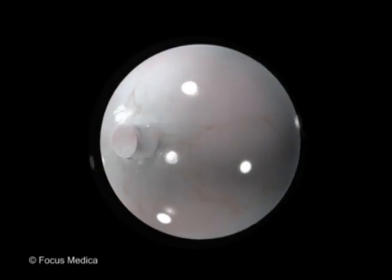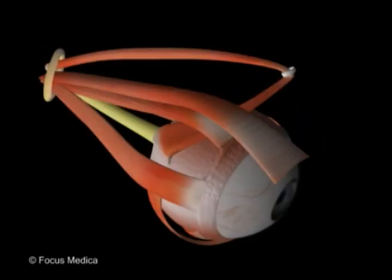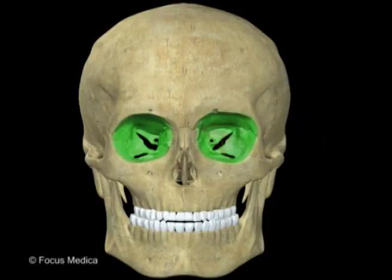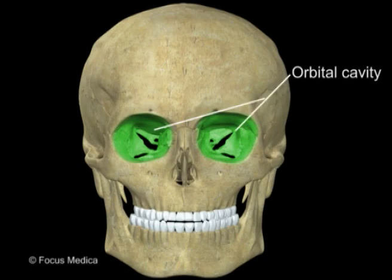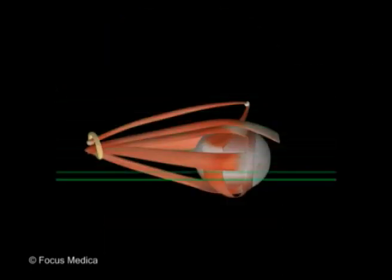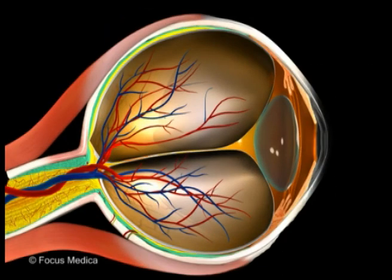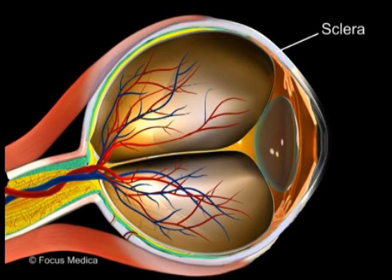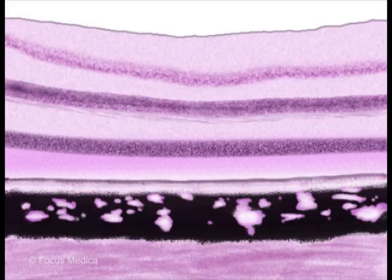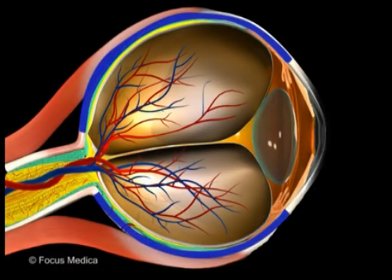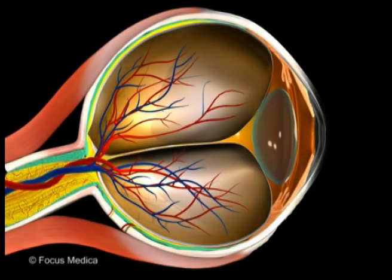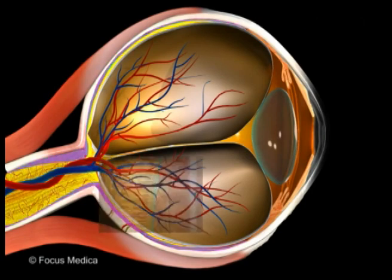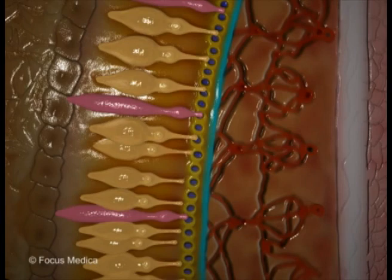The eyeball is a large globe-like apparatus suspended by muscles and fascia inside the orbital cavity. The structure of the eyeball is best appreciated in a transverse section. The sclera is the outermost layer; it is tough and fibrous and provides protection and shape to the eyeball. The intermediate layer is the vascular layer, or the choroid, which contains blood vessels and pigments.